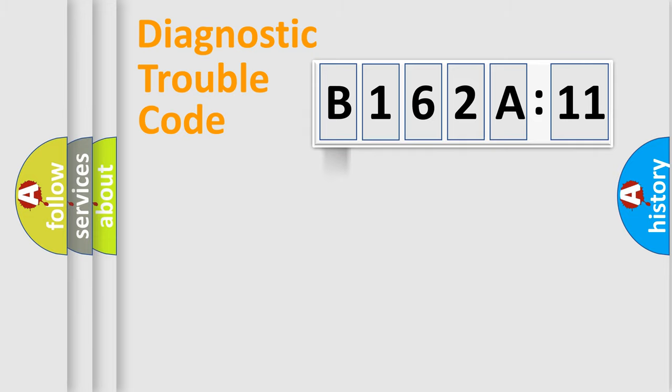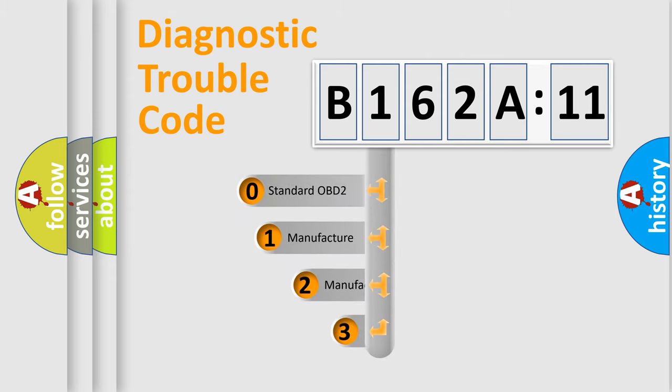Powertrain, Body, Chassis, and Network. This distribution is defined in the first character code.